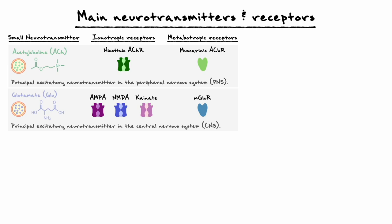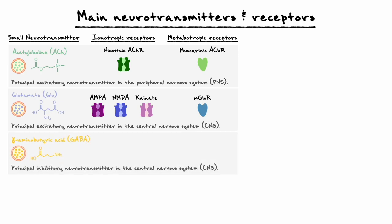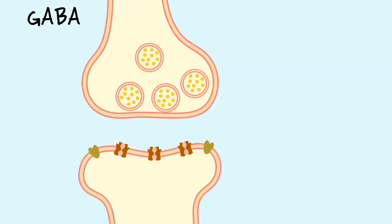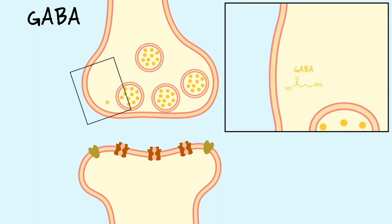The main inhibitory neurotransmitter in the central nervous system is gamma-aminobutyric acid, or simply GABA. To understand this neurotransmitter, let's first consider its synthesis and signal termination mechanism, and then we'll discuss the postsynaptic receptors as well as the inhibition it provides to the nervous system. Just like the other neurotransmitters we've covered, GABA is synthesized and packaged at the presynaptic terminal.